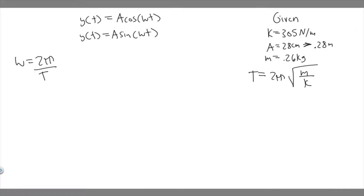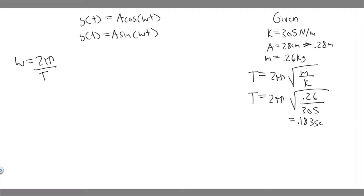So we want to solve for T: 2π times the square root of m, which is 0.26, over k, which is 305. Plug into your calculator: square root of 0.26 divided by 305, then multiply that number by 2π. When you do this, you should get about 0.183 seconds. So T equals 0.183 seconds.